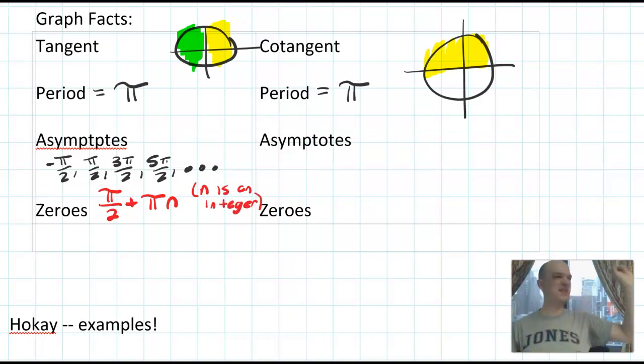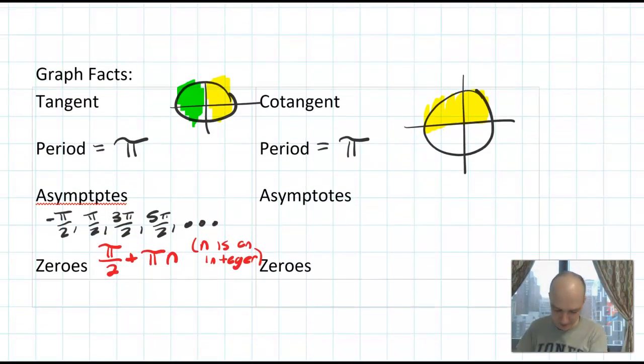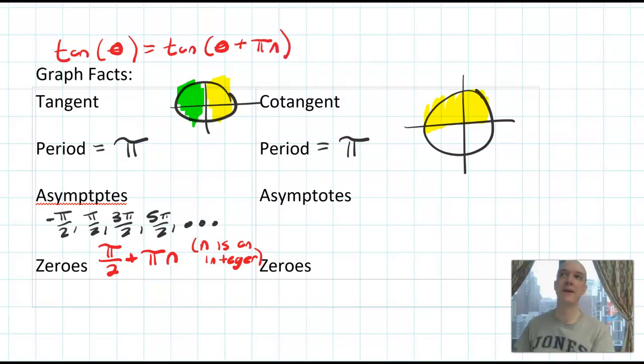This is kind of like a sequence notation, where we had a_n, where n is an integer. But here is just a way of us listing out an infinite amount of asymptotes. We pick a starting spot and use the πn to tell the spacing. It also should remind you of the periodic identities, where we said tangent of x equals tangent of x plus πn. It's using that idea of the periodicity of tangent to describe every asymptote.